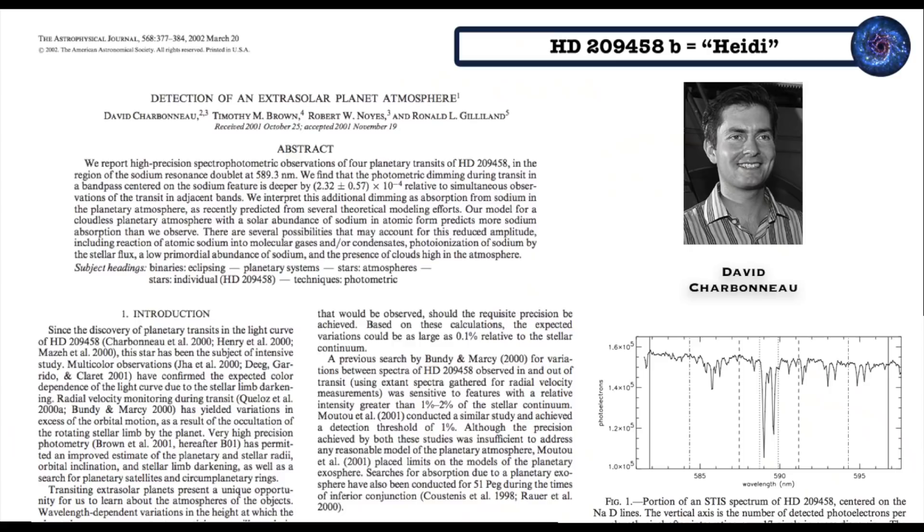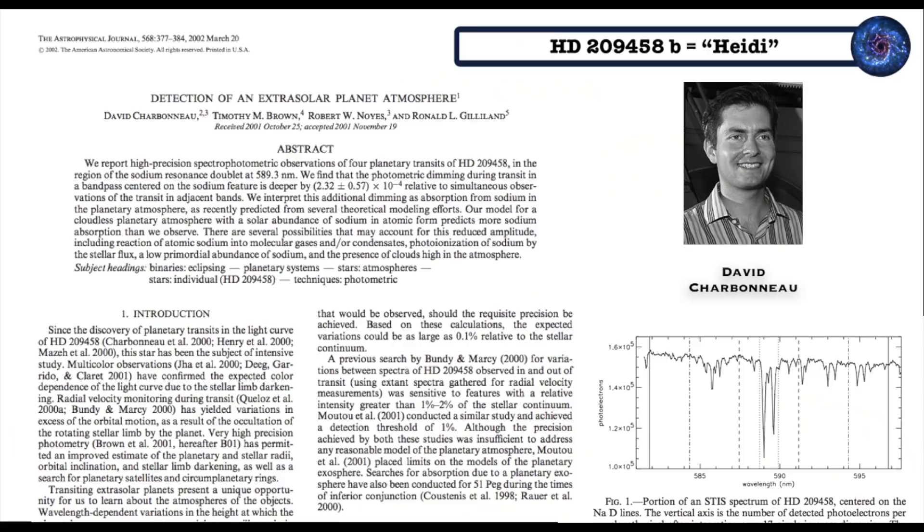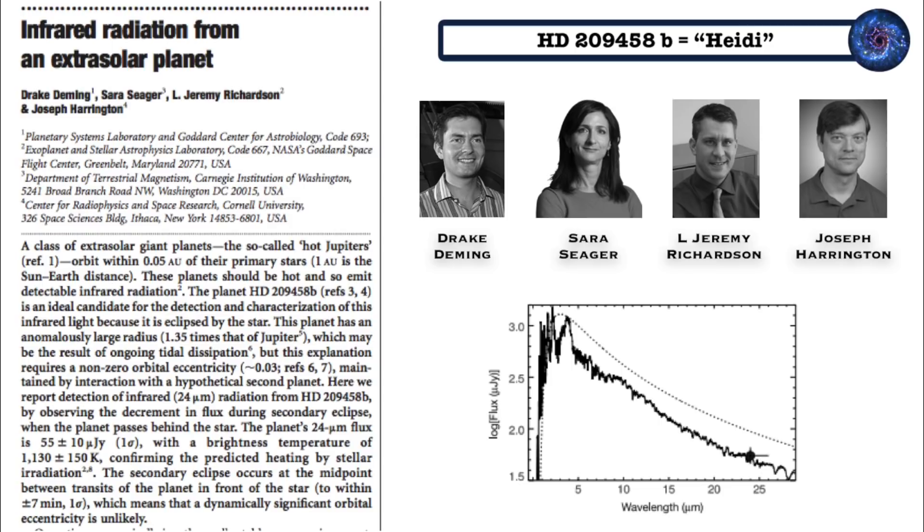And now the golden age of our friend Heidi, HD 209458 b. In 2002, Charbonneau and collaborators managed to detect sodium in the atmosphere of Heidi in the light that had passed from the star and through the atmosphere on its way to Earth. And it became the first exoplanet ever to have its atmosphere characterized in some way or form. In 2005, Deming and collaborators then managed to isolate the light from Heidi, and it became the first exoplanet ever to have radiation specifically from the exoplanet detected.